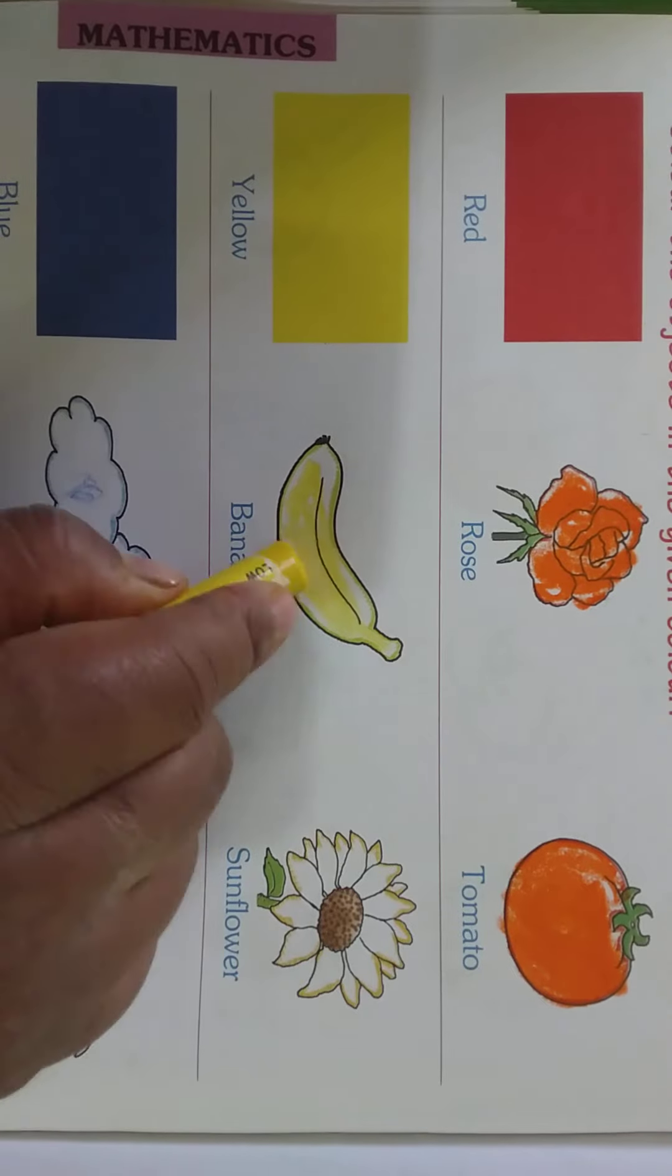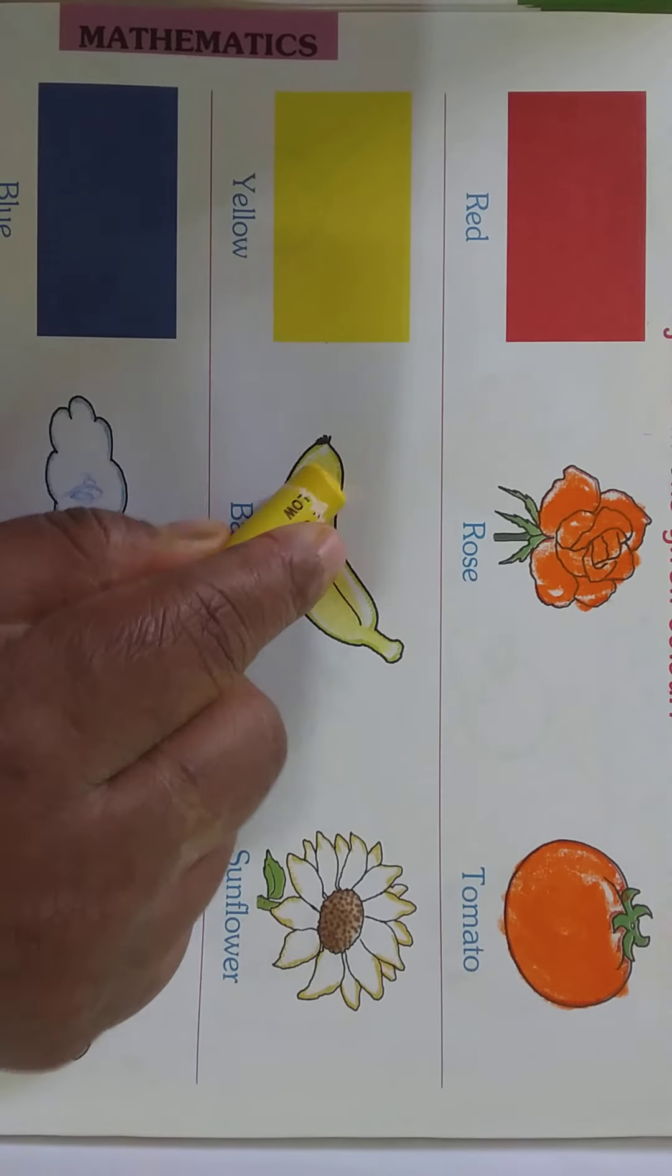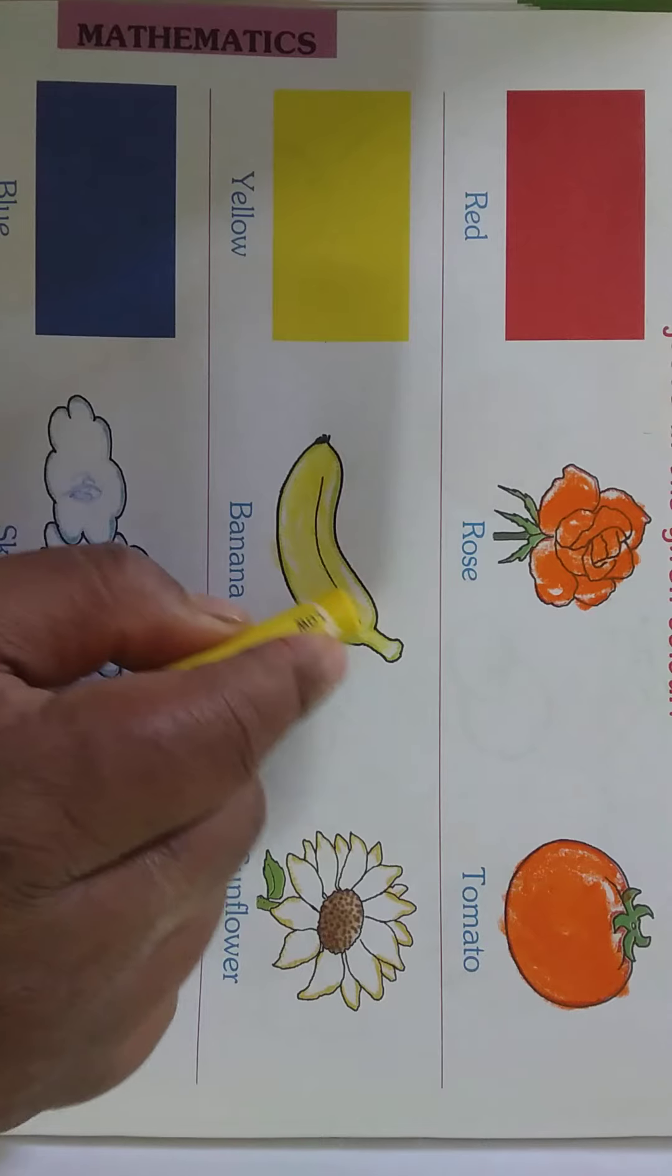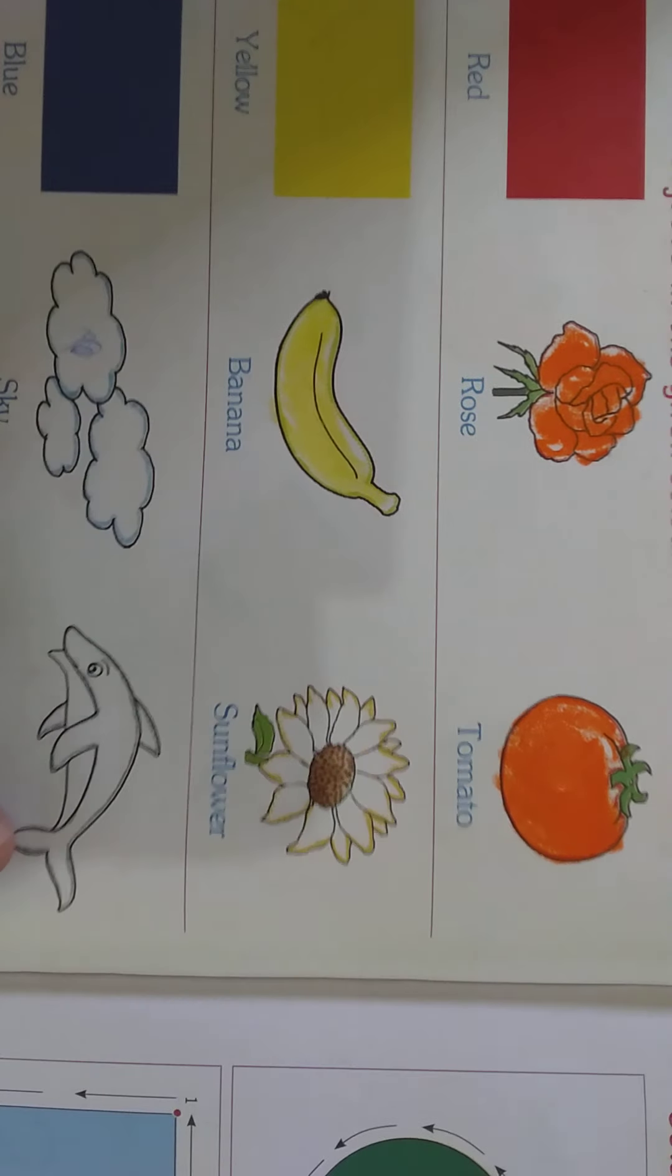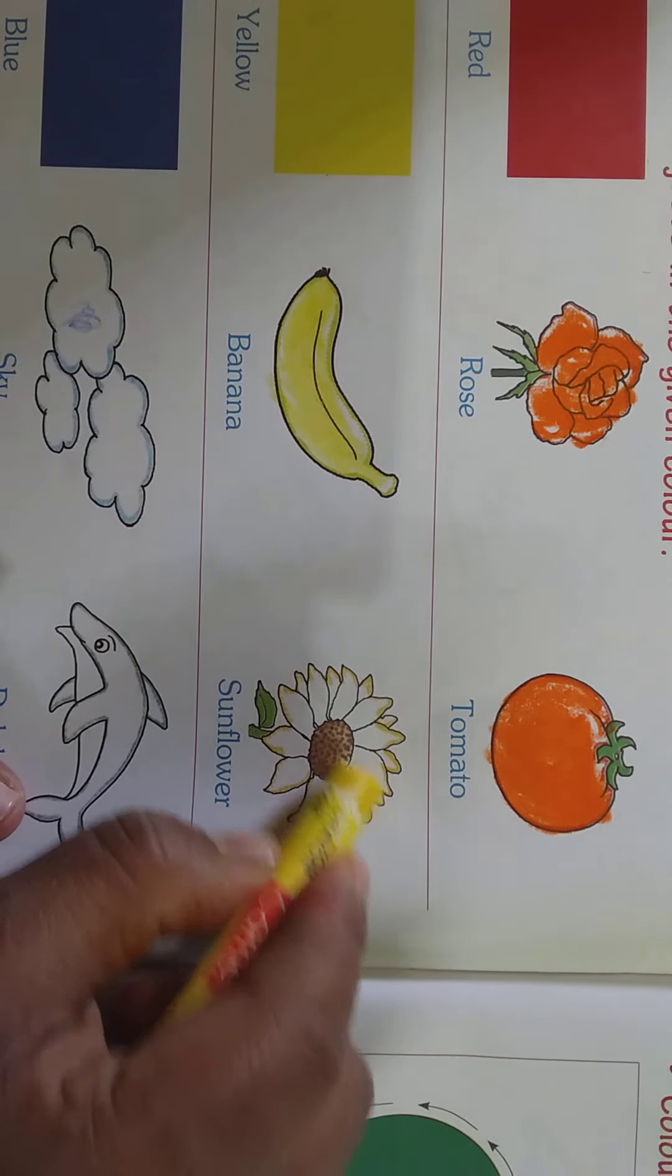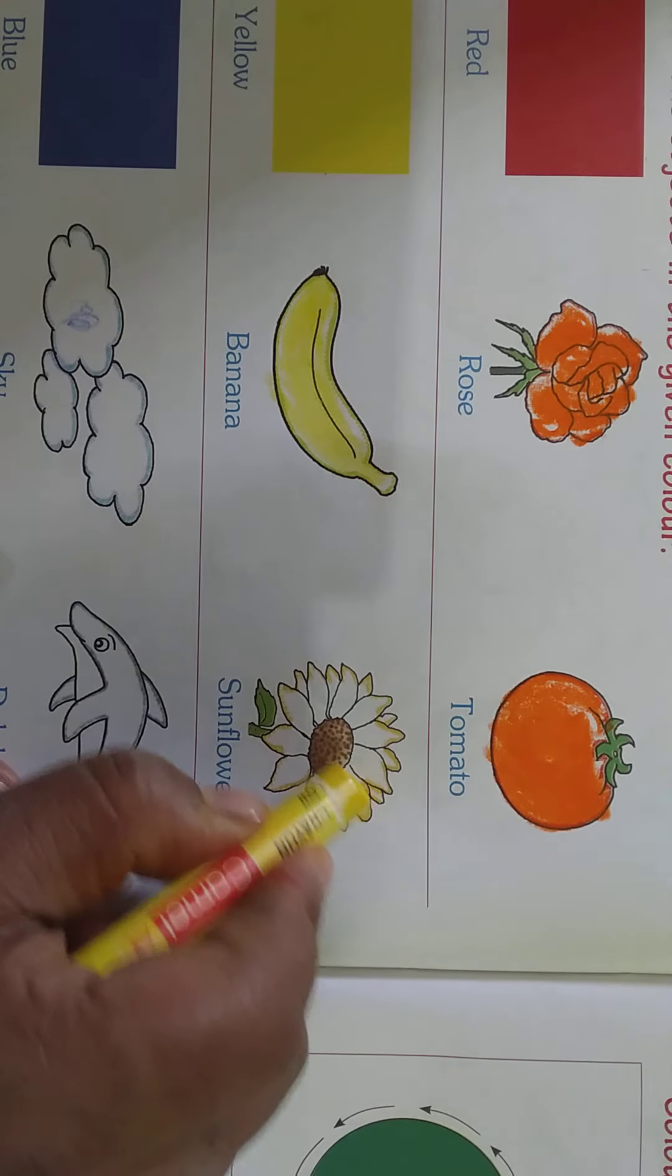See, I am coloring with the yellow color. This is banana. Next we have sunflower. Yes, we will color the sunflower.